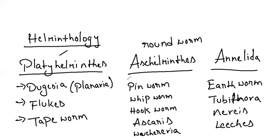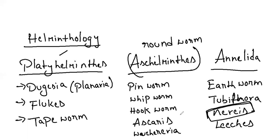Coming to the sexes: platyhelminthes will be bisexual or hermaphrodite, just like annelida — annelida is also bisexual or hermaphrodite. But when it comes to nereis, you can see the unisexual thing — nereis is unisexual. For aschelminthes, first time you can see sexual dimorphism. The male aschelminthes will be smaller with a curve on their caudal end, and the female will be bigger with no curve on its caudal end.